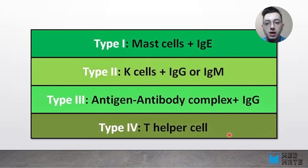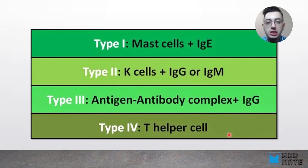So in type 2 we had three things that could happen: cellular destruction, inflammation, and cellular dysfunction. The next type was type 3 hypersensitivity, involving antigen-antibody complexes plus IgG activating the complement system. And the last one, which is cell-mediated and delayed type hypersensitivity, is type 4 hypersensitivity, where T cells or T helper cells are involved.